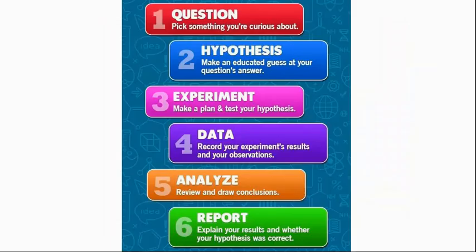In the scientific epistemological method — also called the scientific method — the important thing is testing. In science we test if something is true, and if it isn't we reject it, no matter who said it. Even if Newton said it, even if Einstein said it, if they're proven wrong, they're wrong.